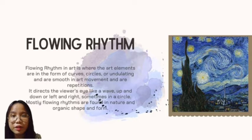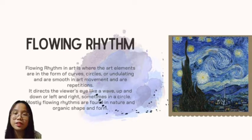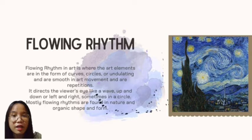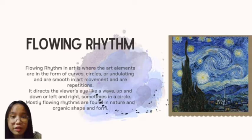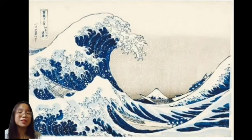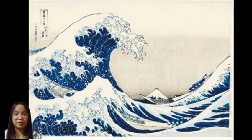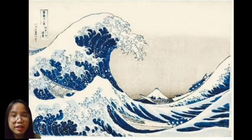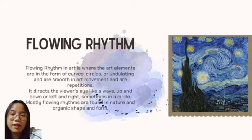Next is flowing rhythm. Flowing rhythm in art is where the art elements are in the form of curves, circles radiating and are smooth in art movements and are repetitions. It directs the viewer's eye like a wave, up and down or left and right, sometimes in a circle. Mostly flowing rhythms are found in nature and organic shapes of art. For example, the Great Wave of Kanagawa is an example of flowing rhythm.